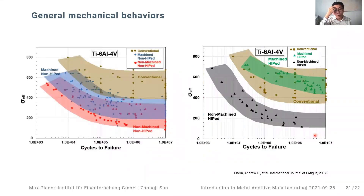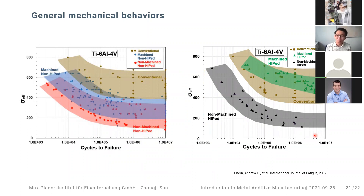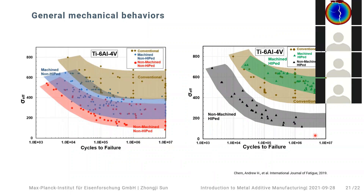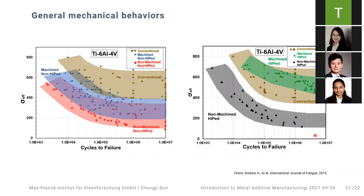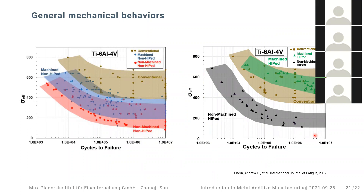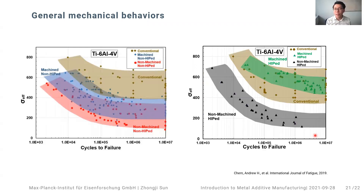Looking very generally, for AM-built samples most of them have a higher yield strength and UTS compared to conventional methods, simply because during solidification or cooling the residual stresses impose a step similar to hot rolling, so the dislocation content is somewhat higher. However, it is really no surprise that AM-built samples have slightly lower ductility compared to conventional methods. In terms of fatigue behavior, this is certainly one area AM researchers are not proud of, because defects are essential for fatigue performance.